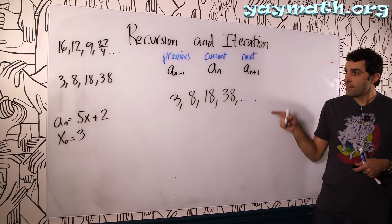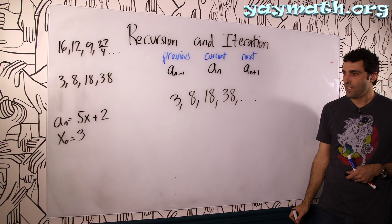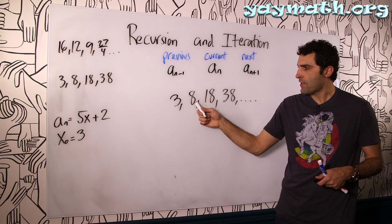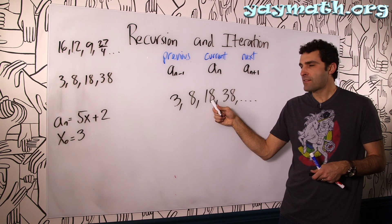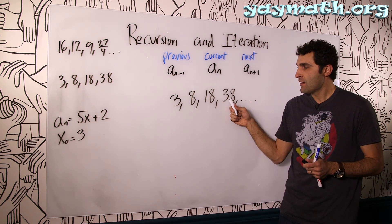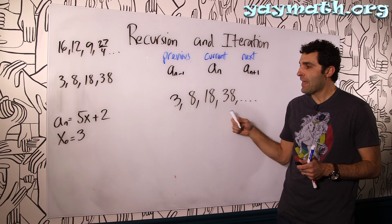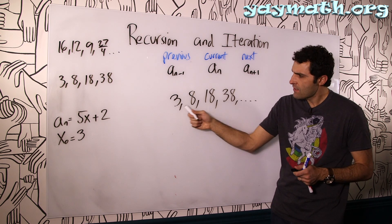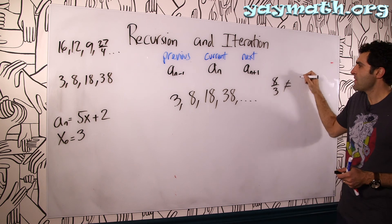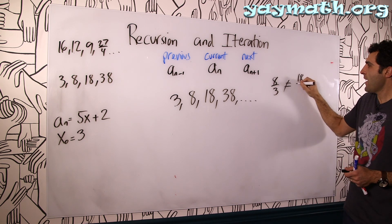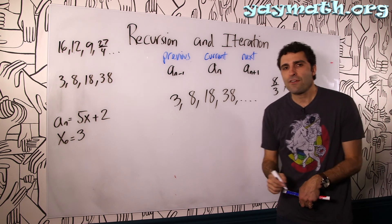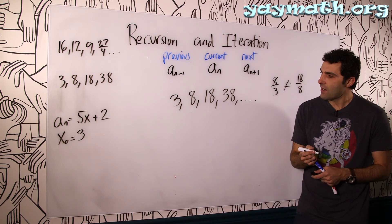Let's try to create this next one recursively. Is it arithmetic? The differences are +5, +10, +20 — interesting, so it's not arithmetic. And it's not geometric because 8 over 3 is not the same as 18 over 8. So it's neither arithmetic nor geometric — it's a quirky, special one.